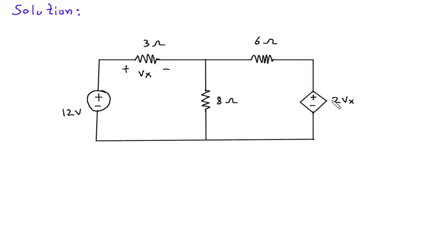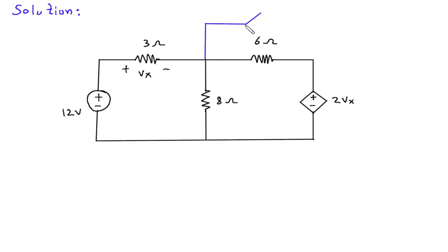Now we can convert this dependent voltage source into a dependent current source. It is in series with this 6 ohm resistor, so this will be a dependent current source in parallel with this 6 ohm.